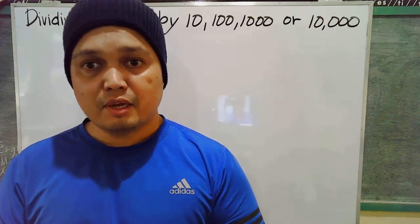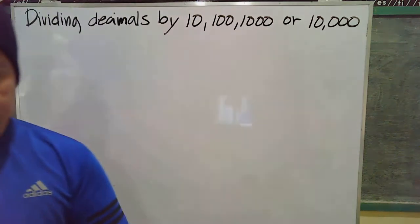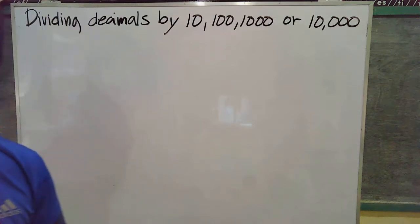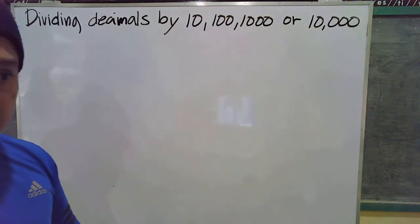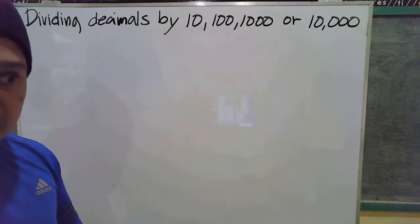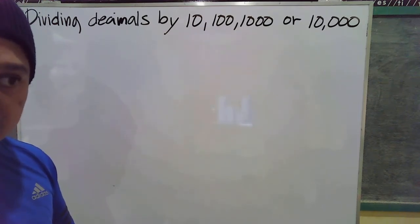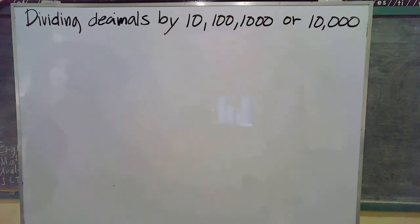Welcome back to your next lesson. This time we're going to divide decimals by 10, 100, 1000, or 10,000. This is easy because to divide decimals by these numbers, all we need to do is copy the number, or our dividend, then move the decimal point to the left depending on the number of zeros our divisor has.